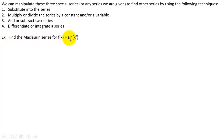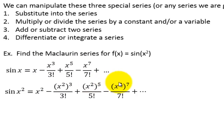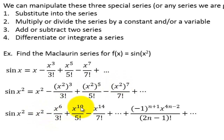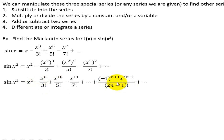Example: find the Maclaurin series for f of x equals sine of x squared. Here's the series for sine of x — the odd function, so we have the odd powers. Now we're going to replace each of the x's with x squared. We end up with x squared, x to the 6th, x to the 10th, x to the 14th, and so on. The powers are increasing by 4 each time. The general term uses n starting at 1: 2n minus 2 in the exponent gives x squared for the first term, and in the denominator we have 2n minus 1 factorial, giving us the series in summation notation starting at n equals 1.